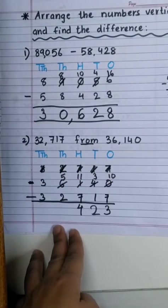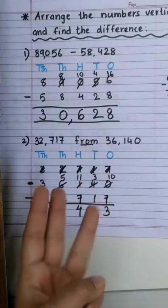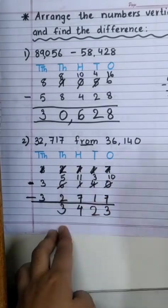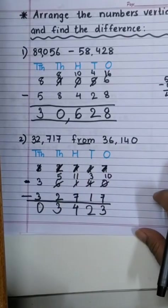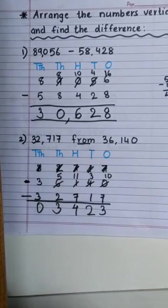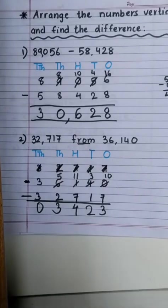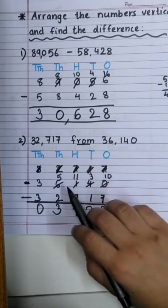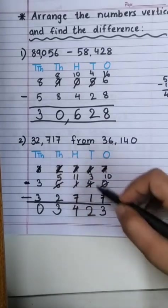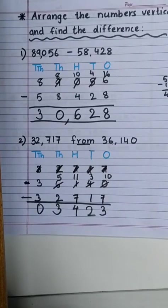5 minus 2. After 2: 3, 4, 5. 3 minus 3 will be 0. So, answer is 3,423. Easy! Don't forget this rule. Bigger number in upper row. Smaller number in lower row. Okay!